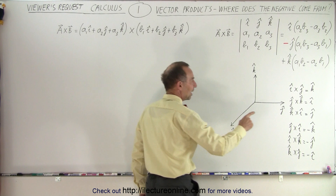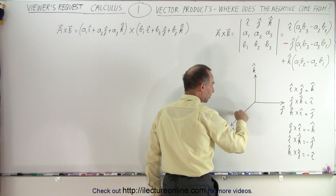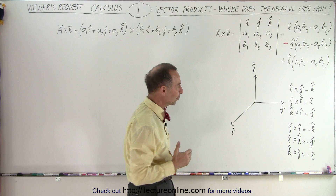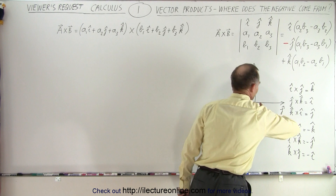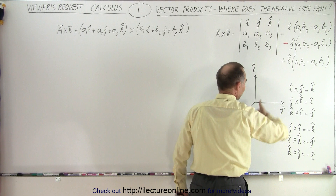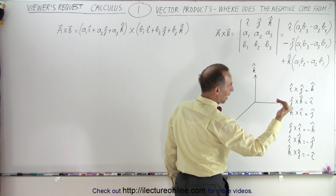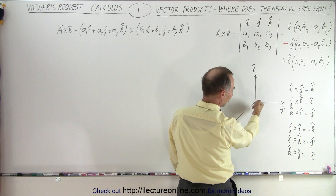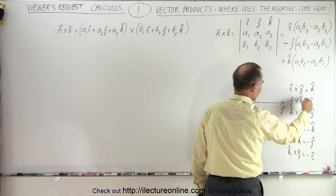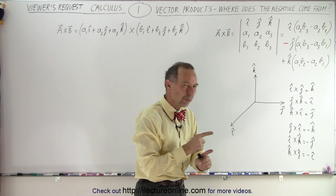It all comes down to understanding your unit vectors. You have your I, J, and K unit vectors along the X, Y, and Z axes. If we do the cross products of unit vectors using the right-hand rule: take your fingers in the direction of I, curl them toward J, and your thumb points in the positive K direction. So I×J = +K, J×K = +I, and K×I = +J.